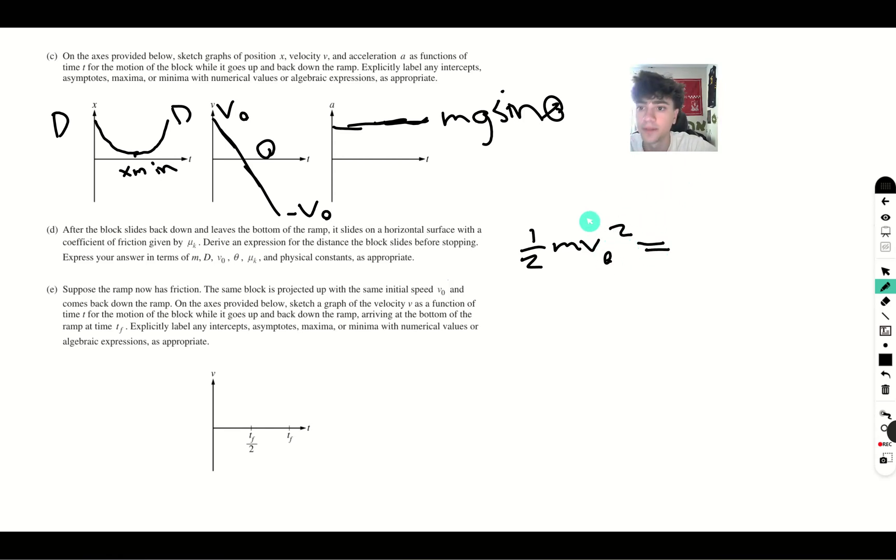And we end with when all of the energy is dissolved by friction due to work. So let's write out our work equation, force times distance, and that will be the only energy because it's all been dissipated.